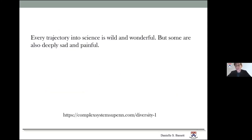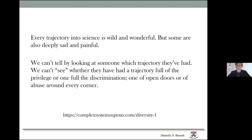So I think with all of these trajectories talks, you've probably heard and will continue to hear that each trajectory into science is wild and wonderful. But some are also deeply sad and painful. And I think often we need to remind ourselves that we can't tell by looking at somebody which trajectory they've had. We can't see whether they've had a trajectory full of privilege or one full of discrimination. We can't see whether they've had a trajectory full of open doors or of abuse around every corner. And so it just reminds us to be kind, to be generous, and to look out for each other.